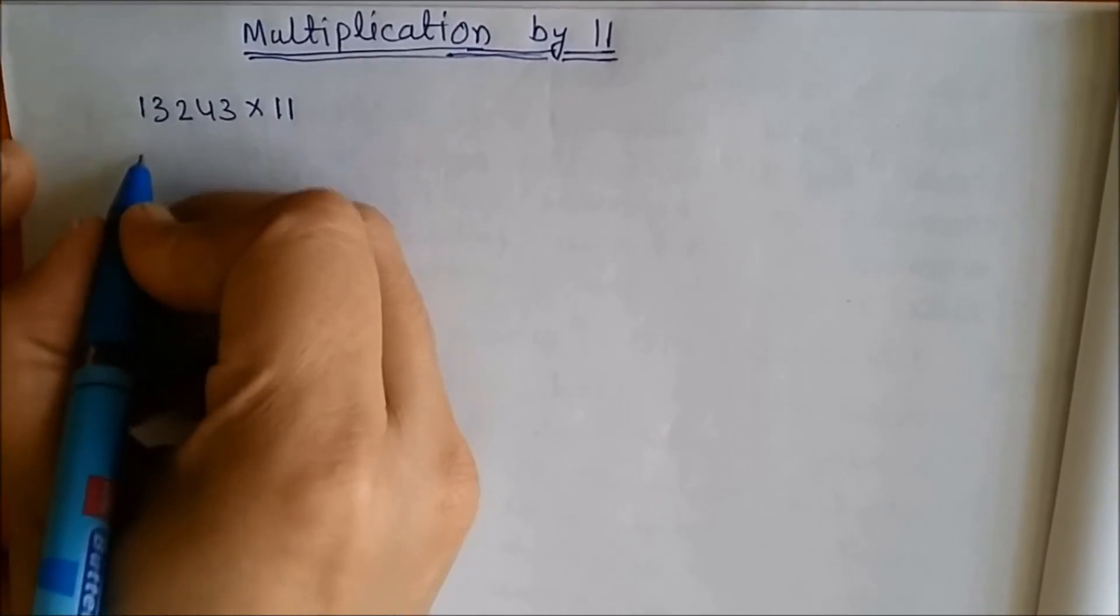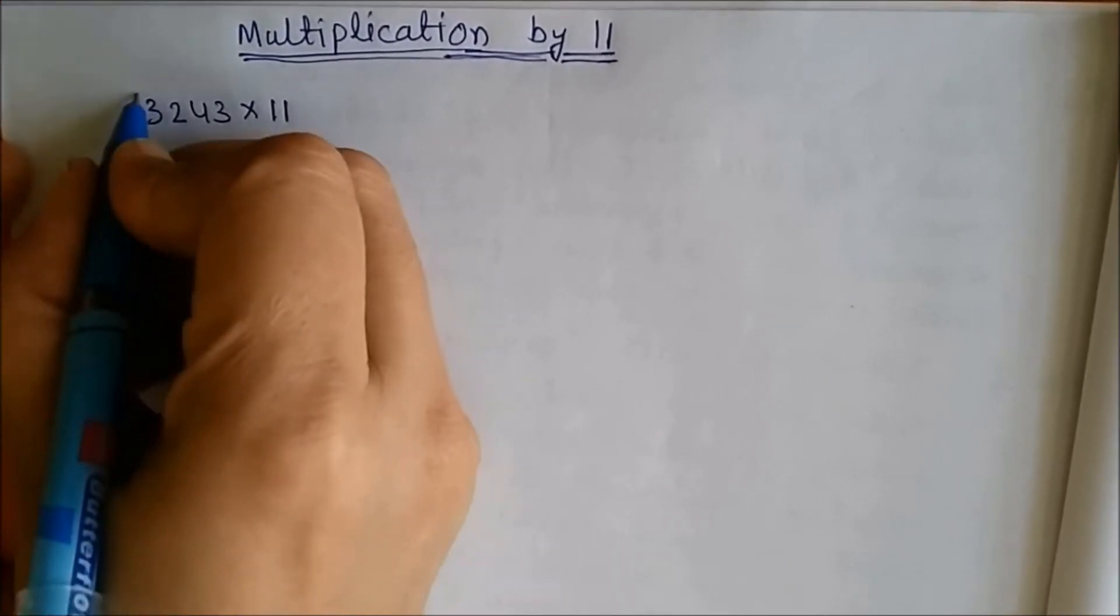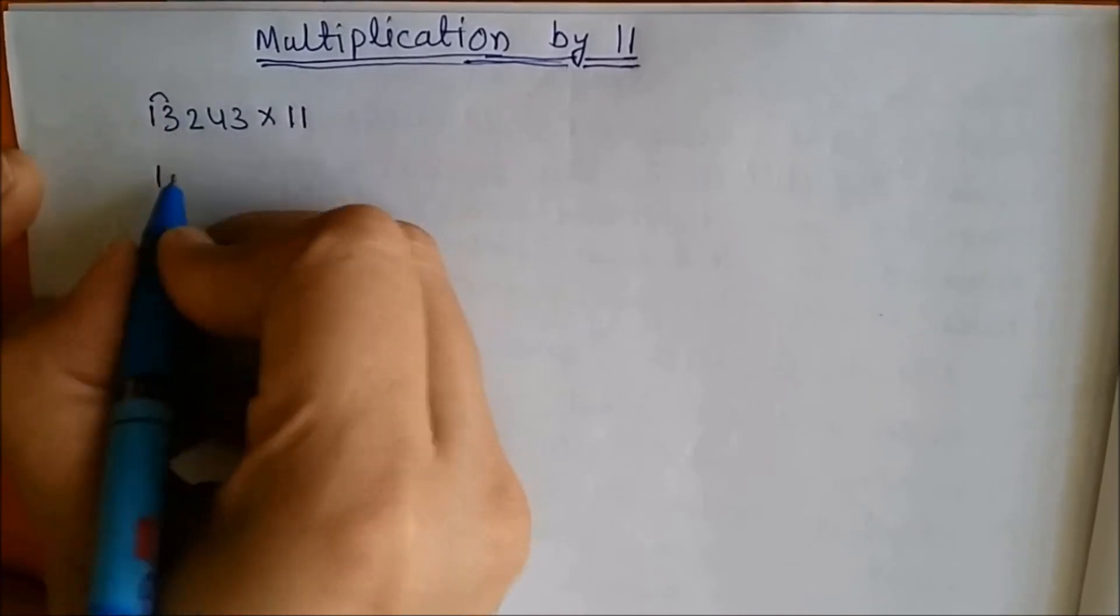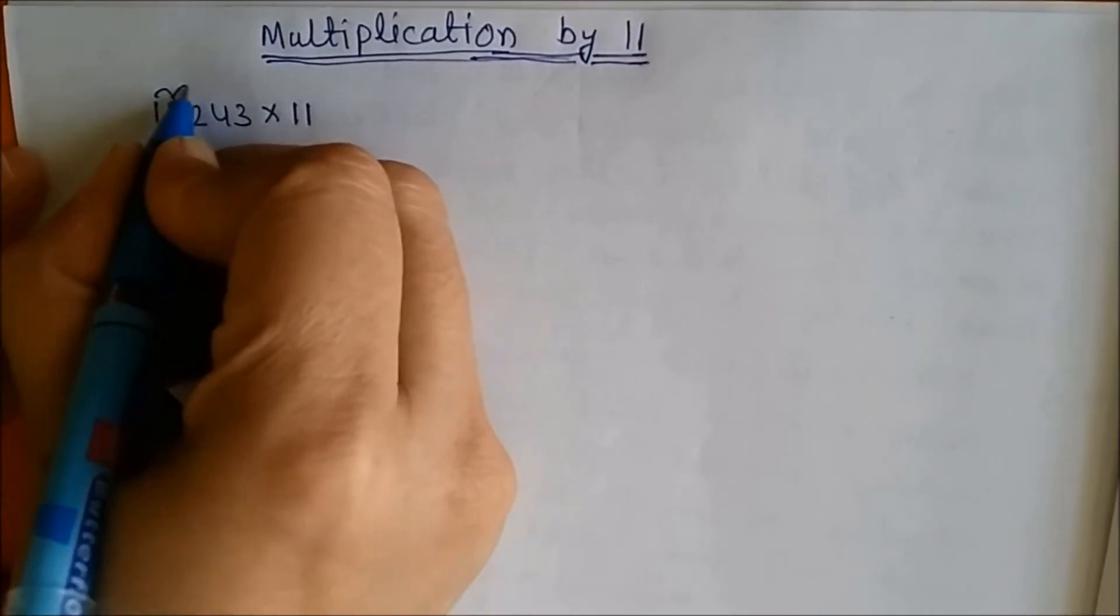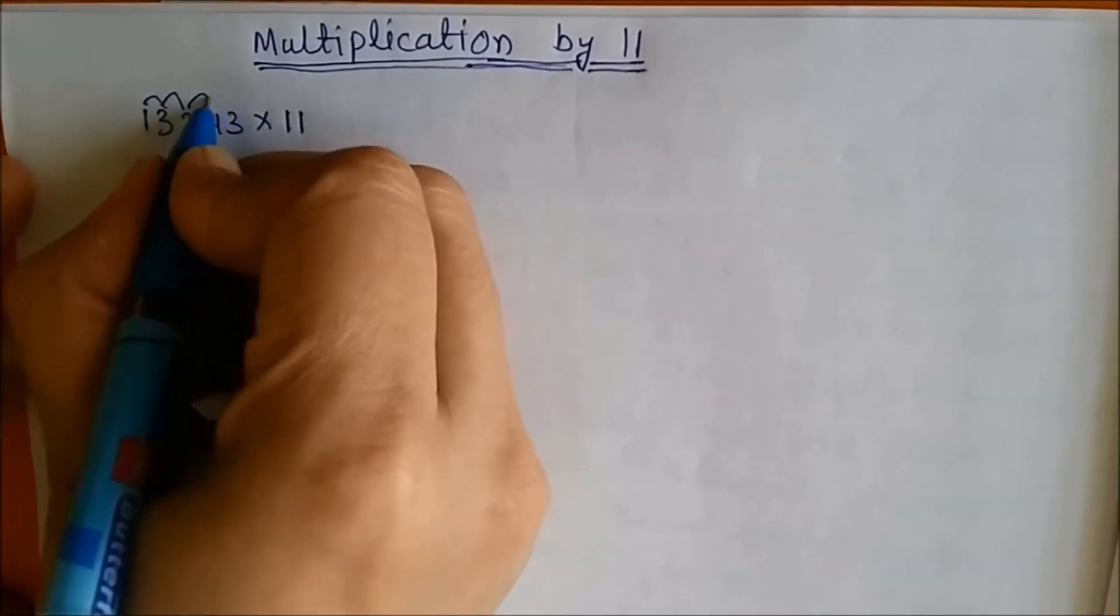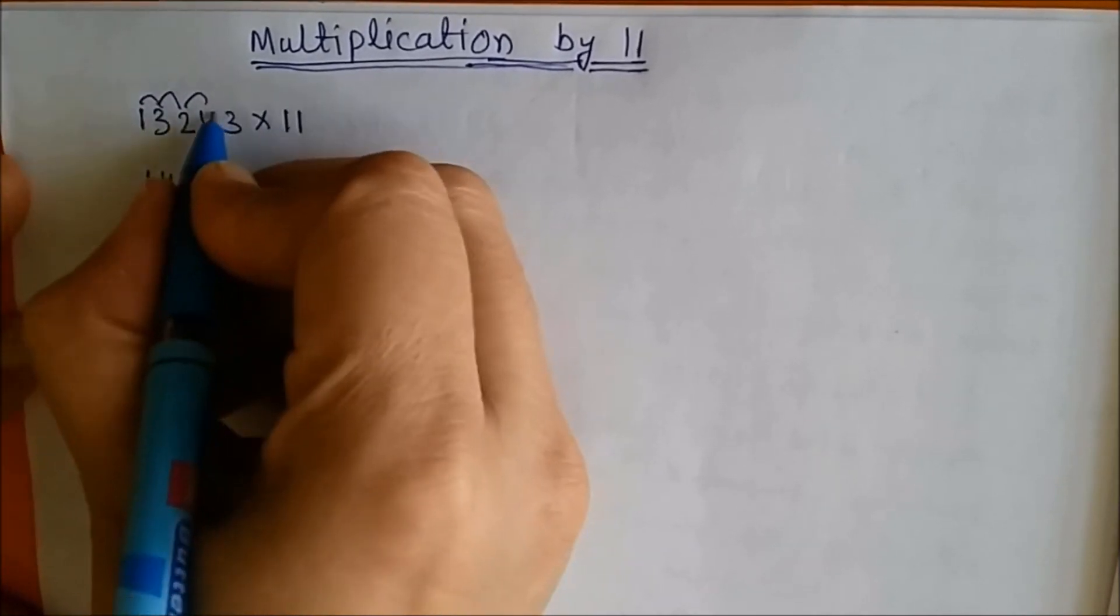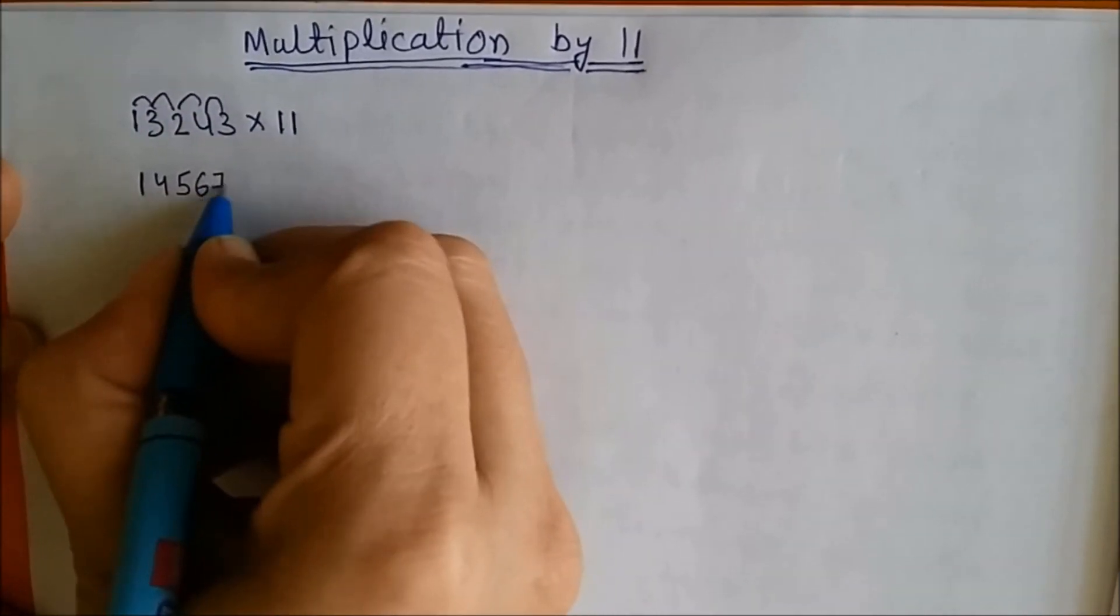See how I am doing the things. First of all I will write this number as it is 1, and then add these two: 1 plus 3 is 4, 3 plus 2 is 5, 2 plus 4 is 6, 4 plus 3 is 7, and the last number as it is.